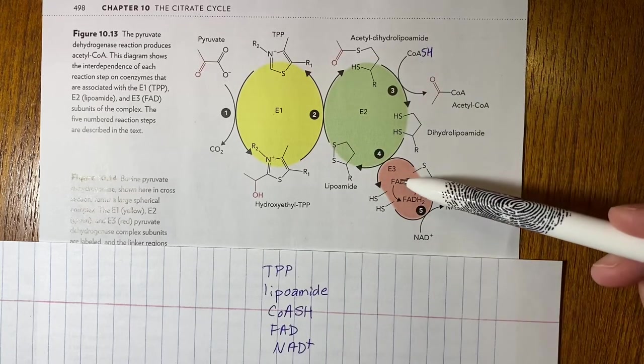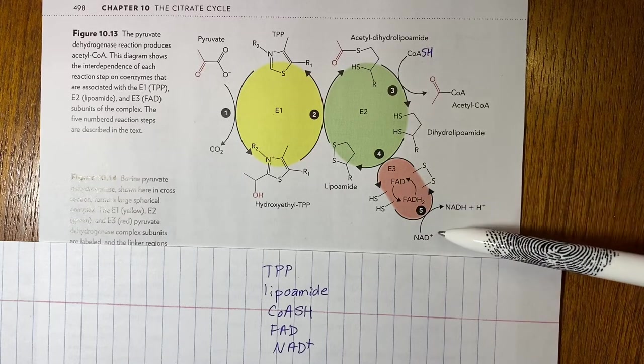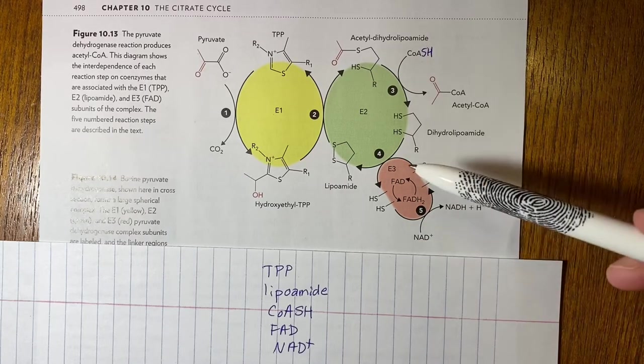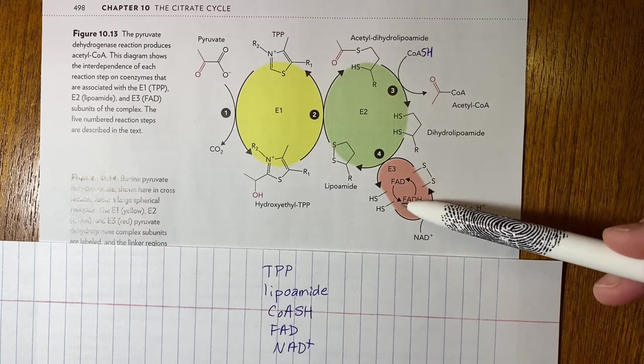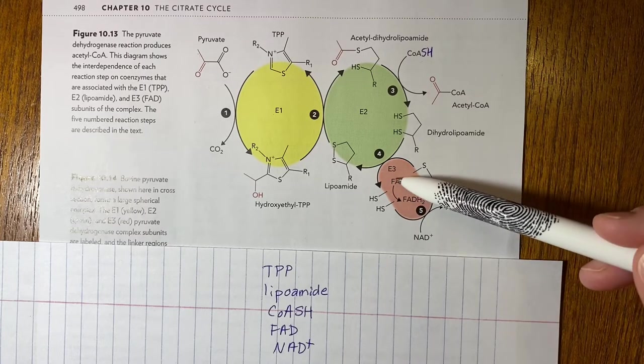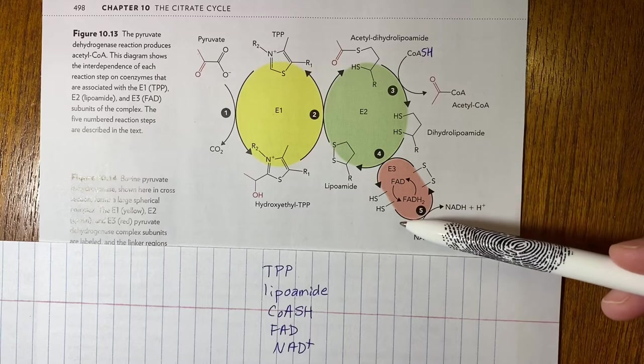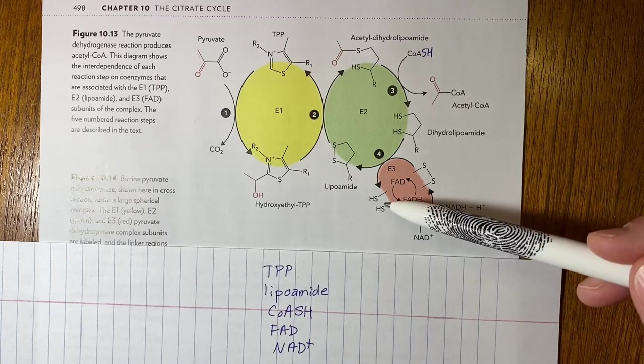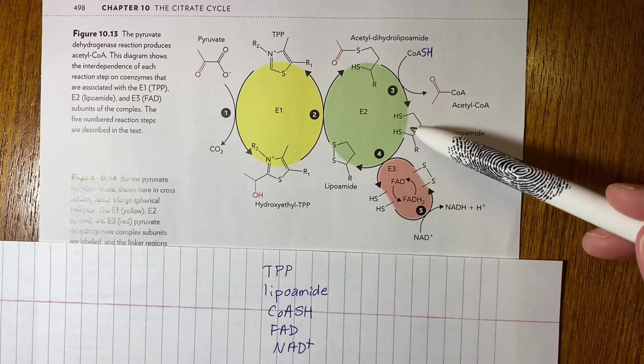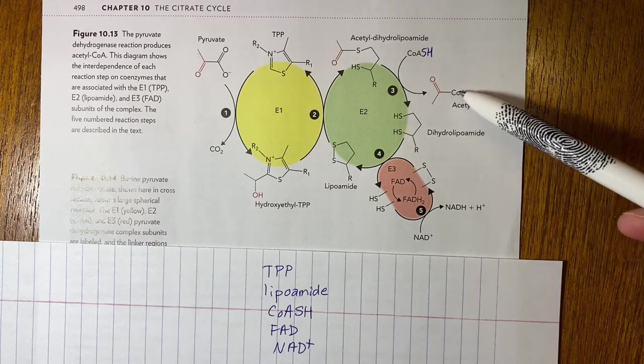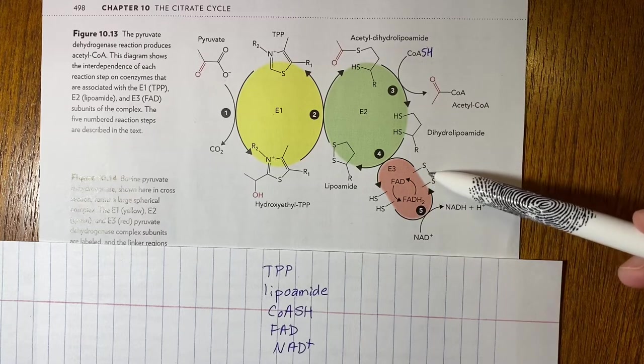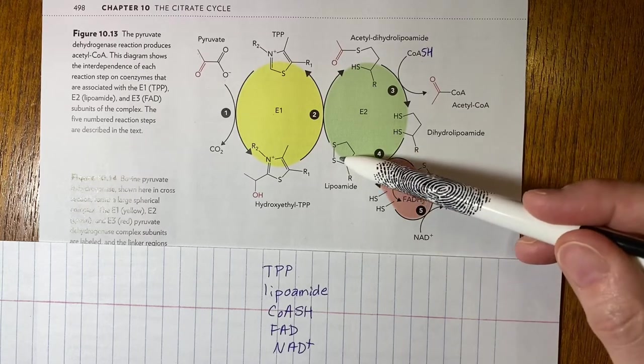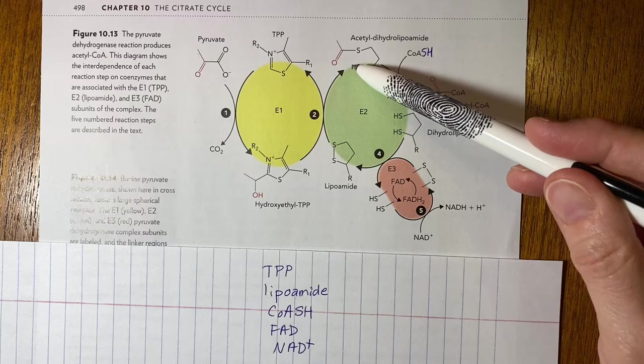The last two coenzymes are shown here FAD and NAD+. So the role of FAD is it will get reduced to FADH2 and when it does that it oxidizes the dihydrolipoamide which is the end product of releasing the acetyl group in this step back to the disulfide form so it can go on and do another round of catalysis.